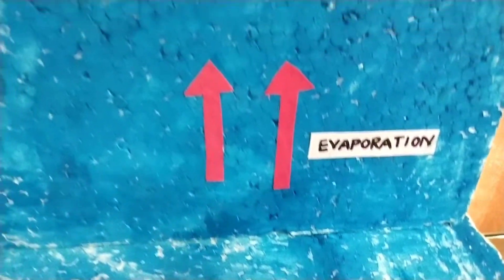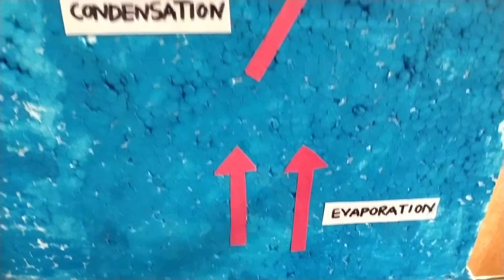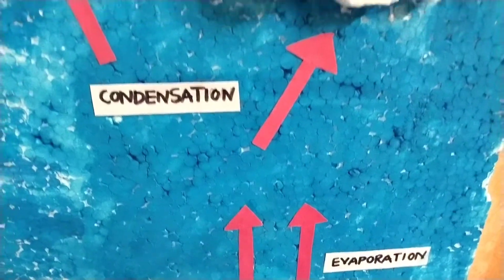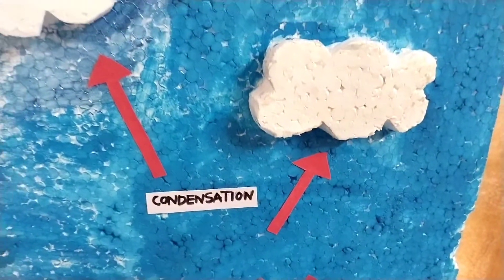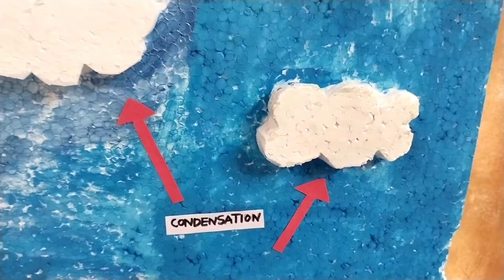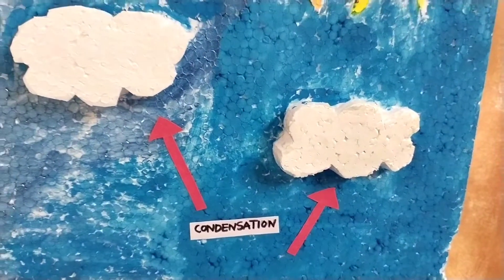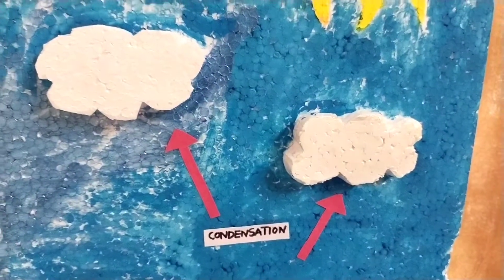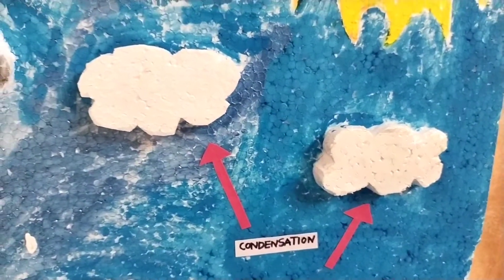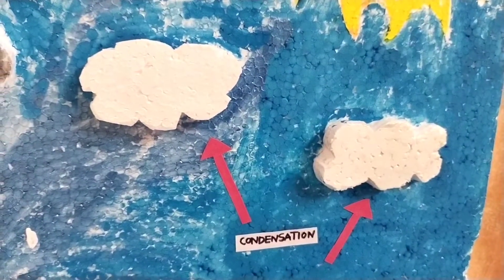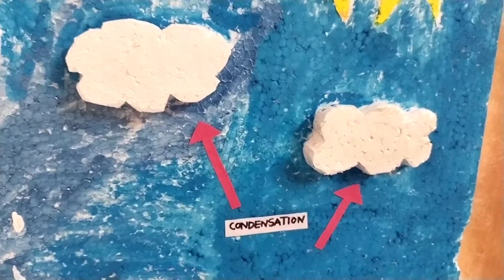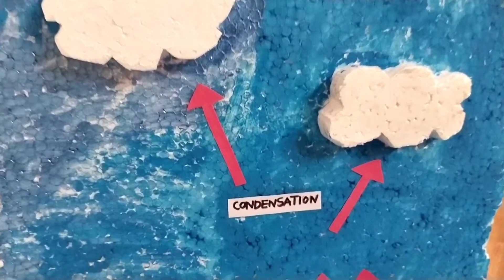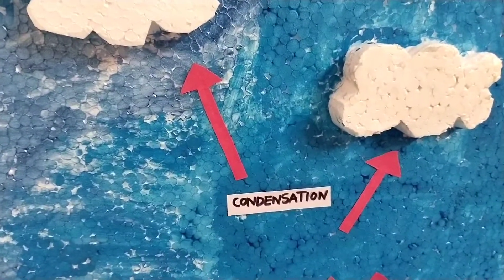When the water vapor reaches the sky, it turns into water droplets. These water droplets, along with dust and gas, come together and form clouds. This is called condensation.